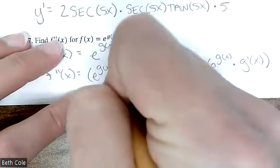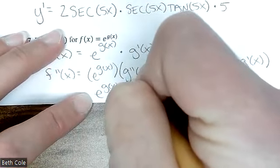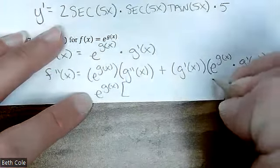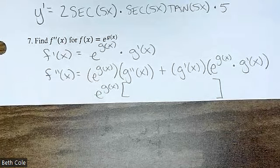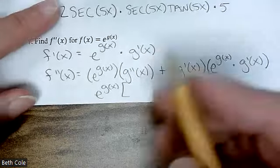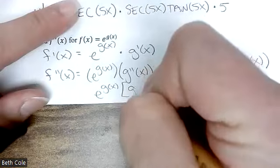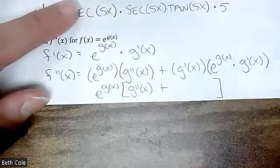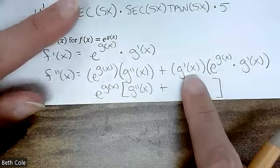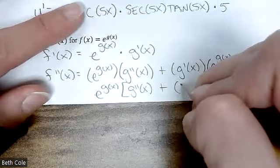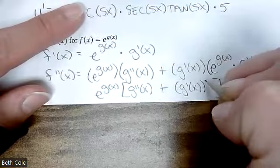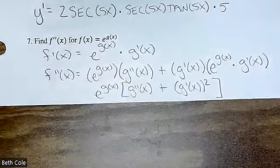E to the G of X gets factored out. What's left from both terms — it's GCF, it just looks really awful. What's left is G double prime plus, now it's G prime times G prime, so it's G prime squared.